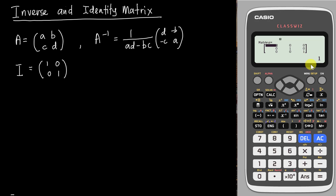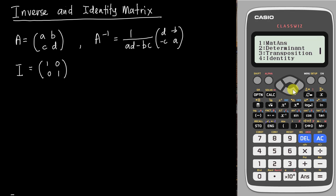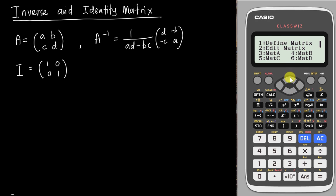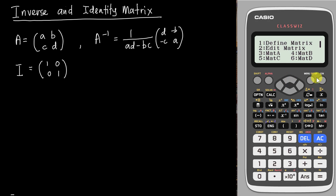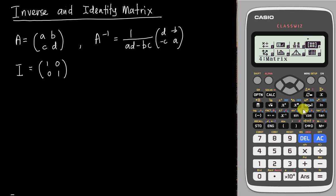That's how you get the identity matrix from the calculator. However, if you go to the Option menu and scroll down, you'll notice that there's no direct inverse matrix function listed. So for the inverse matrix you need to use another method — that's the purpose of this video.